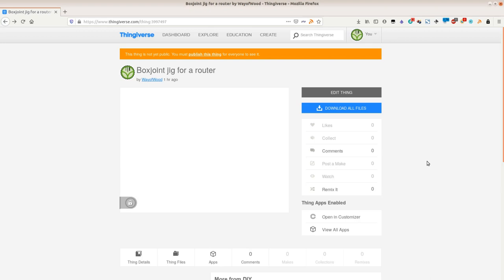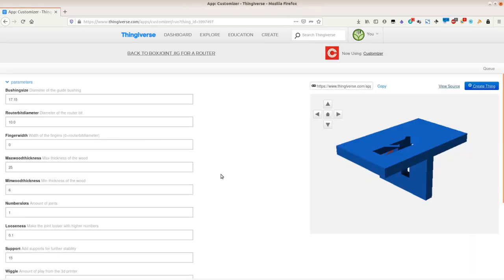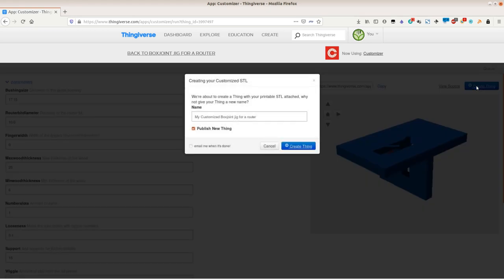In order to create your own jig use the link in the description, go to the Thingiverse website and click on the customizer. For a simple jig you ignore all setups but the size of the router bit and the size of your guide bushing. The customizer will work for a while.